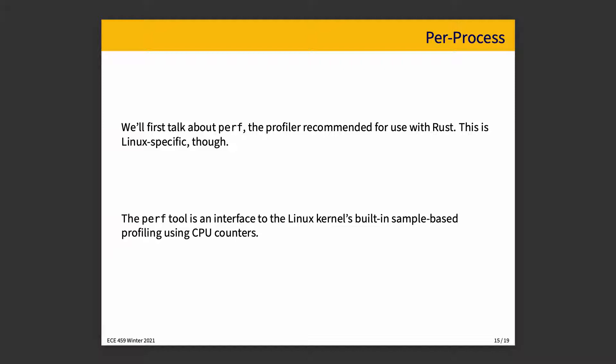The first tool I'm going to talk about is Perf. This is the profiler recommended for use with Rust, but it is Linux specific. The Perf tool itself is an interface to the kernel's built-in sample-based profiling using CPU counters, which is what makes it Linux specific. You can use it per-process, per CPU, or system-wide, although you do have to be the root user for some of those modes. As an individual, we could use it per-process, and that would be fine.